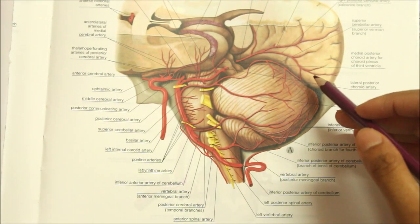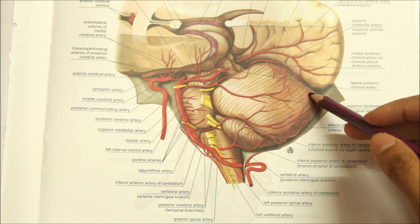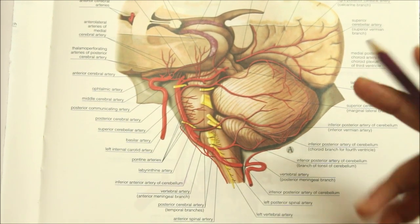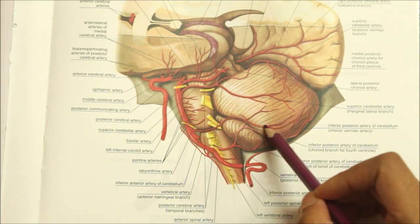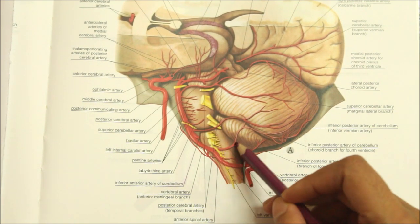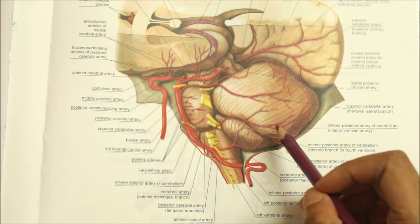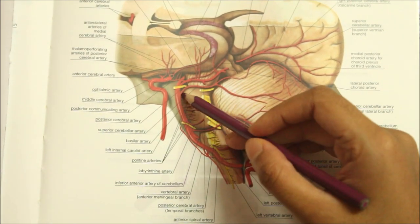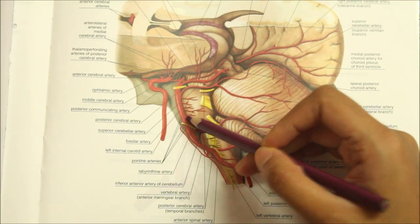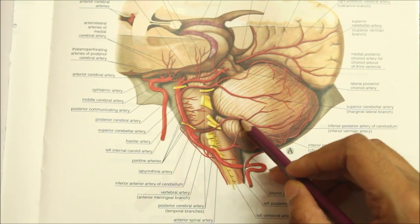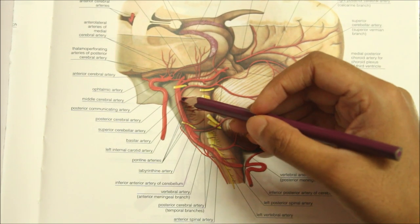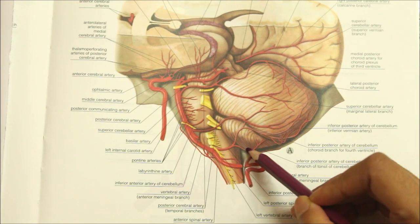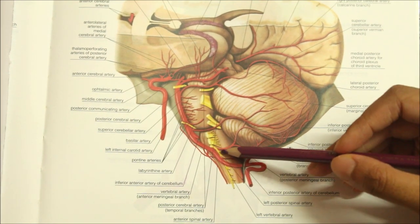Moving on to the blood supply of the cerebellum: the cerebellum is supplied by two superior cerebellar arteries, two anterior inferior cerebellar arteries, and two posterior inferior cerebellar arteries. The superior cerebellar artery and the anterior inferior cerebellar artery are both branches of the basilar artery, while the posterior inferior cerebellar artery is a branch of the vertebral artery.